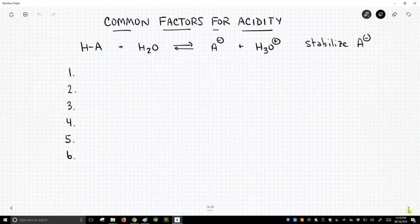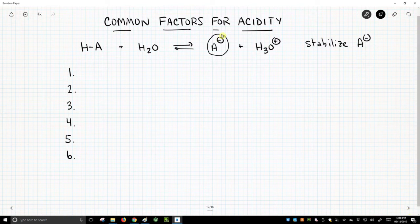So here is essentially our simple acid-base reaction. We take an acid, it mixes with water. To some degree, it will form this conjugate base, as well as H3O+. So these factors, all the factors we're going to talk about, are factors that potentially stabilize this A-, this anionic conjugate base.